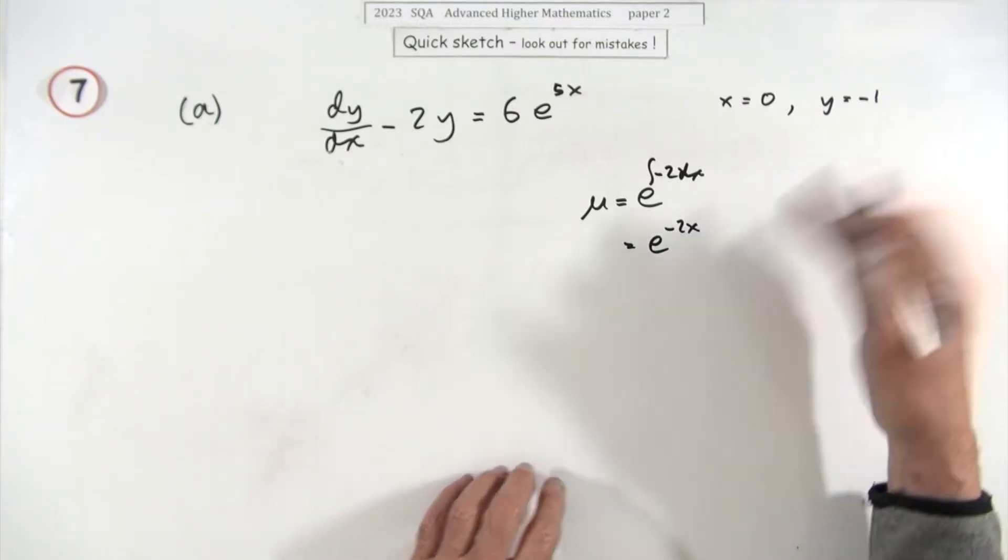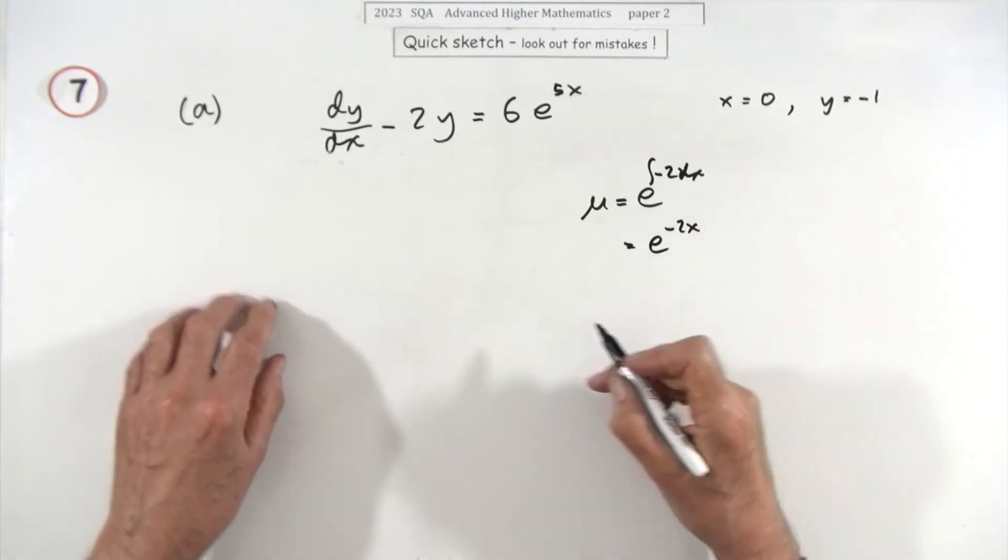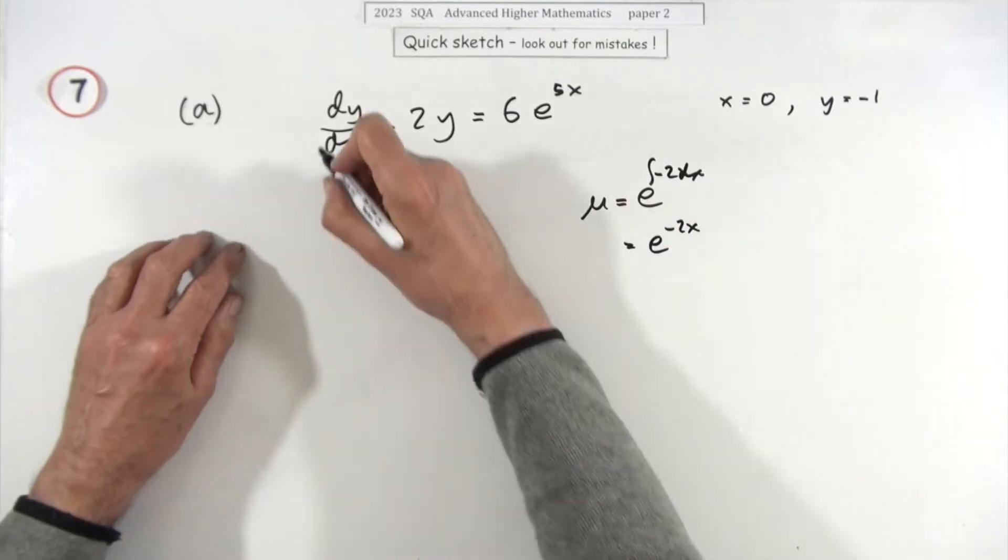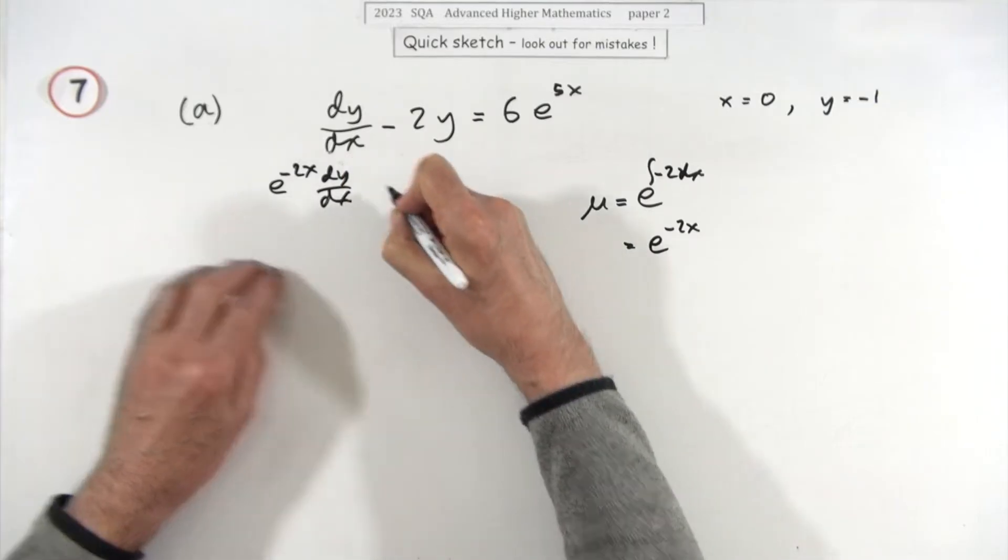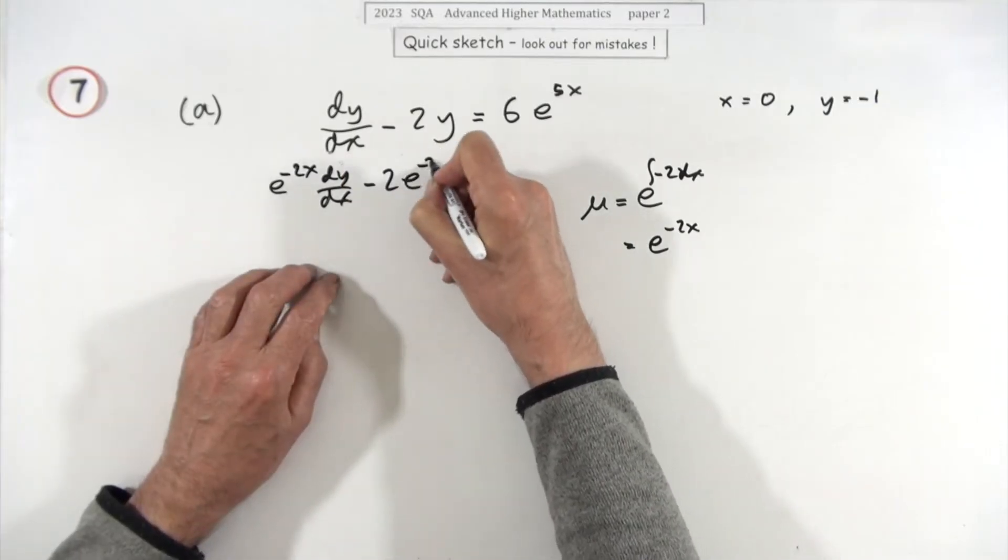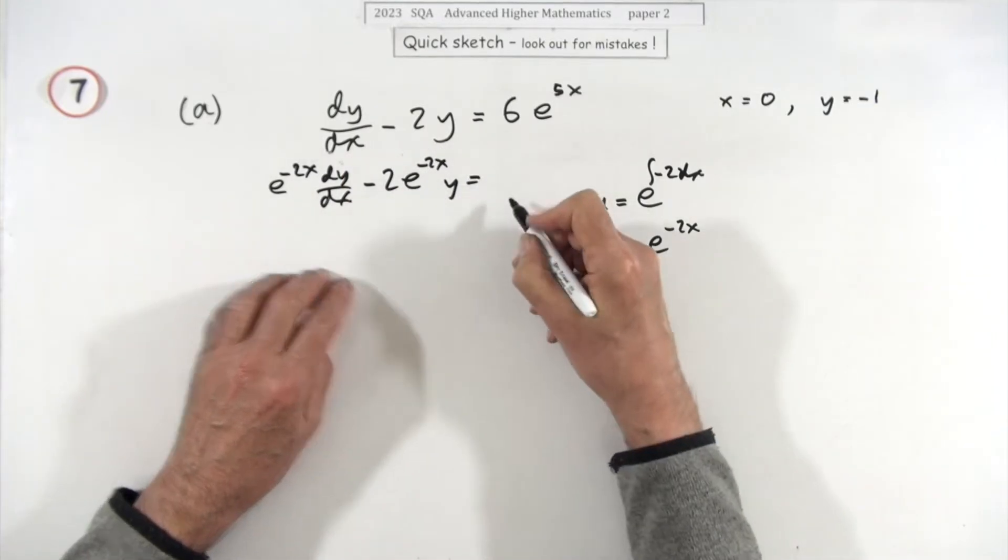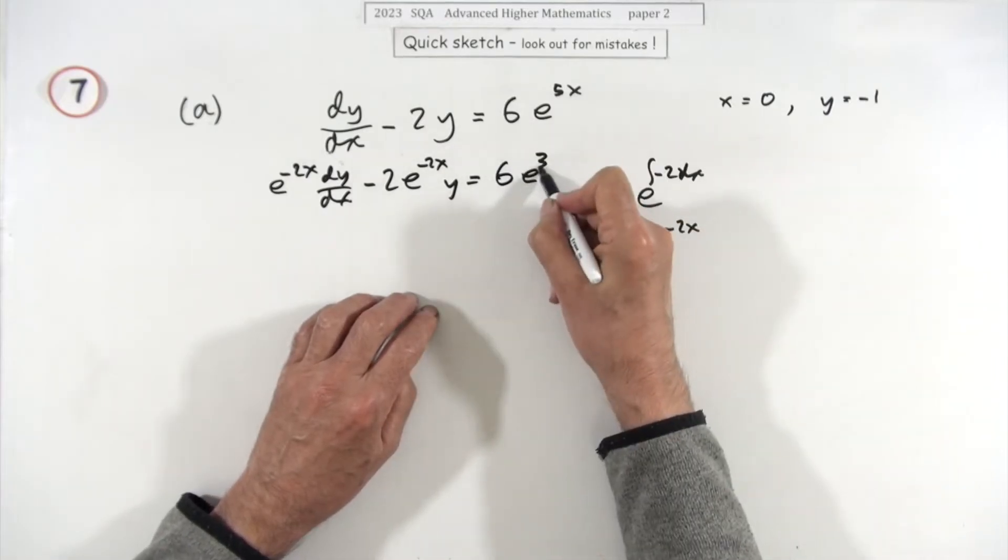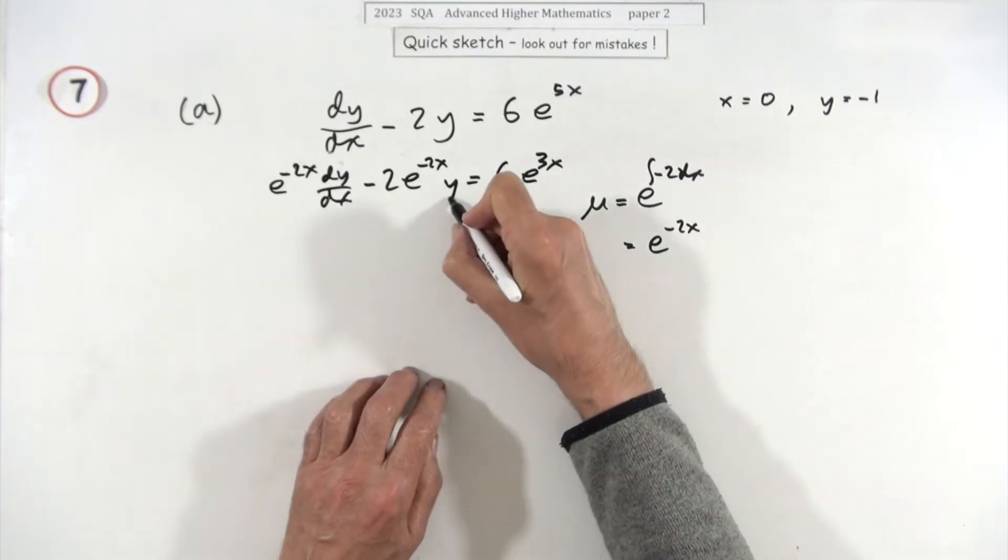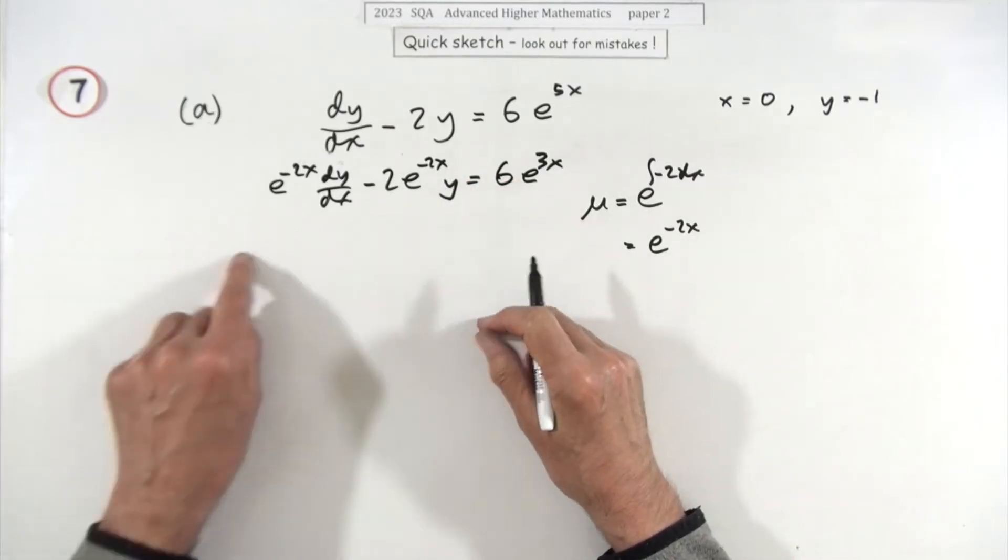Multiplying everything up, so if you do e to the negative 2x times that, minus 2 times e to the negative 2x times that, that would give you 6 times e to the—but this time you multiply by that, that'll drop that down to a 3x. Now you may well not show this, but I like to show it so you can see you've actually got it to work.